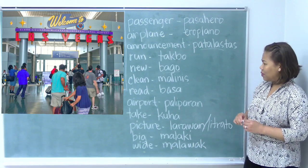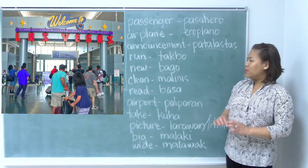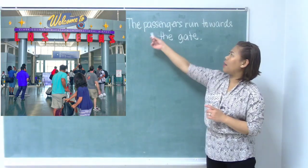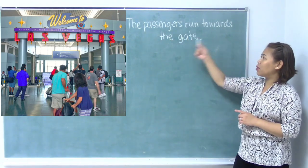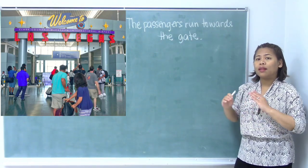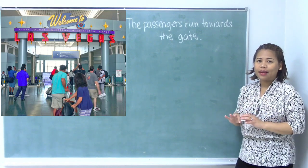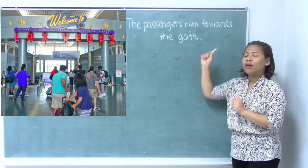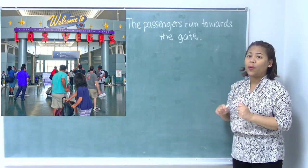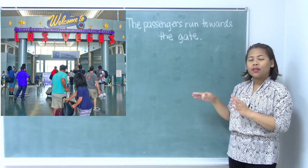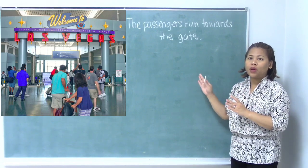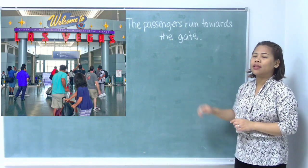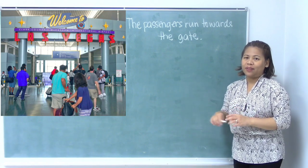Now I think we are going to do some sentences. So let's take one sentence at a time. The first one is: the passengers run towards the gate. If you've just watched the lesson before this, then the SVO pattern is still fresh. So we need to see if this sentence is in SVO pattern, and then we are going to convert them into formal Filipino, which is also in SVO pattern, and then into conversational Filipino, which is the VSO pattern.